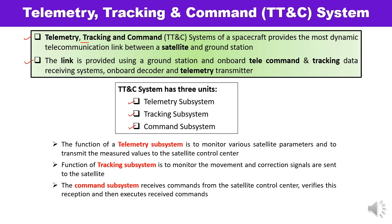The function of telemetry is to monitor the satellite parameters and to transmit the measured values to the control stations. The function of tracking is to monitor the movement of the satellite continuously — as if you are tracking someone, you are continuously observing and monitoring. The command subsystem performs the opposite operation to telemetry: it receives commands from the earth station, verifies their reception, and executes them.